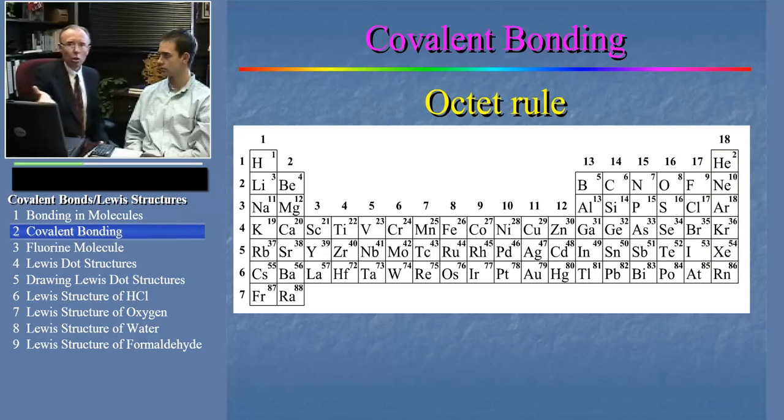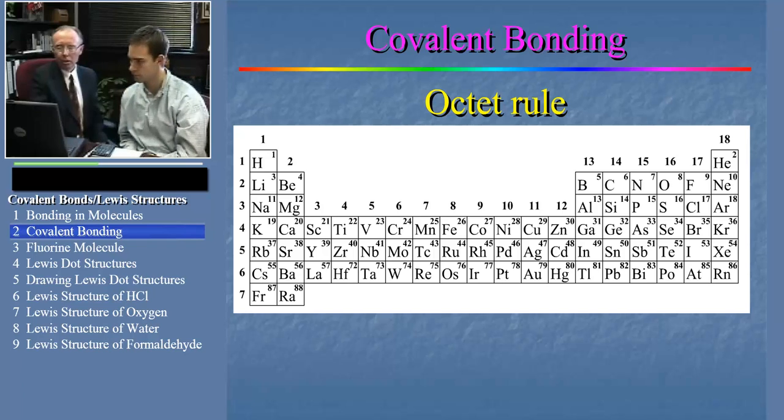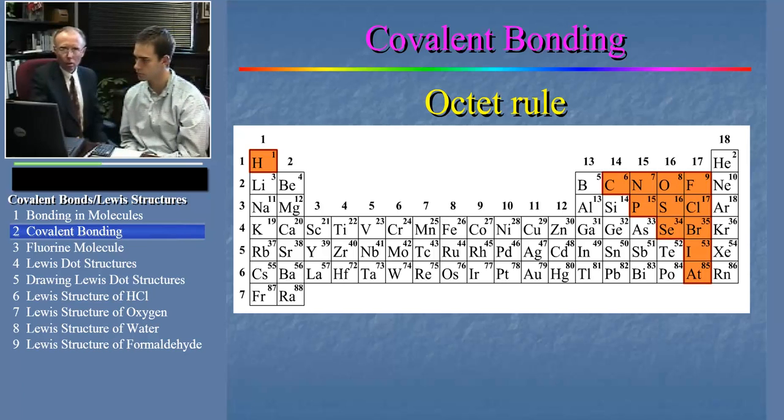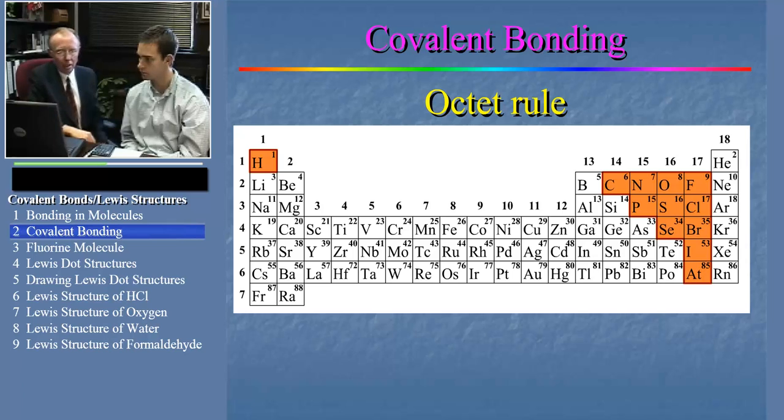Now, the question arises, which elements on the periodic table would want to obey the octet rule by sharing electrons? We can take a look here and notice that it's the elements in the upper right-hand corner, the non-metals, excluding the noble gases.